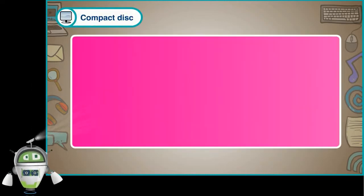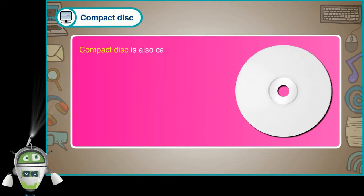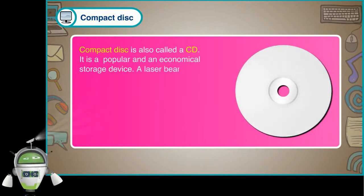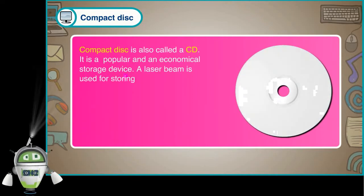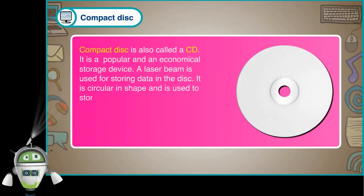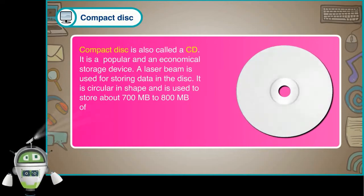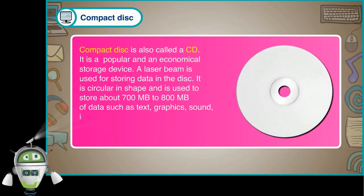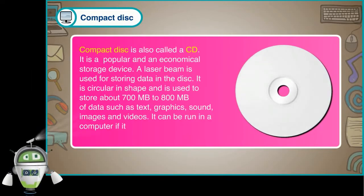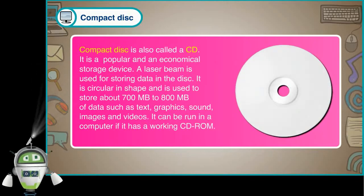Compact disk, also called a CD, is a popular and economical storage device. A laser beam is used for storing data in the disk. It is circular in shape and is used to store about 700 MB to 800 MB of data, such as text, graphics, sound, images and videos. It can be run in a computer if it has a working CD-ROM.